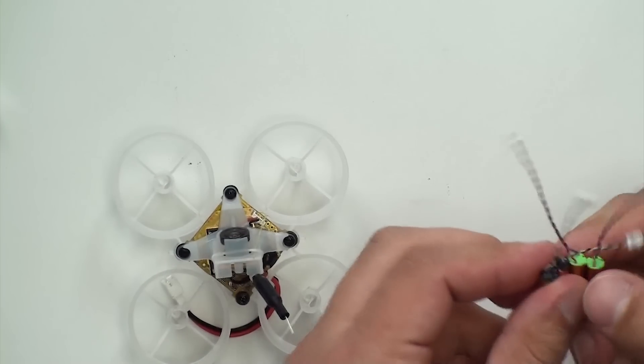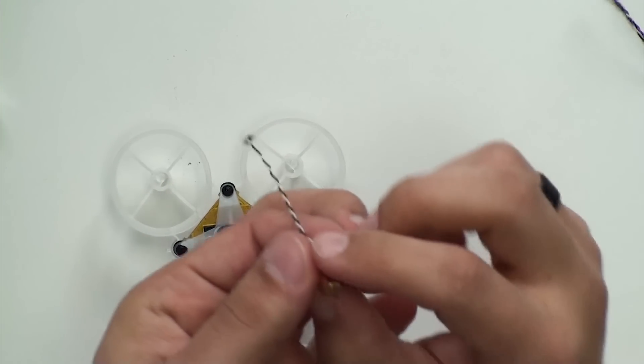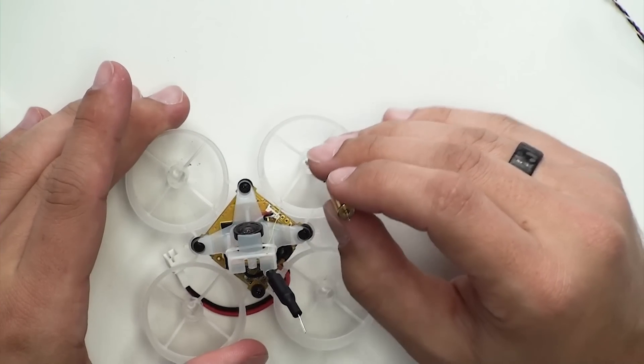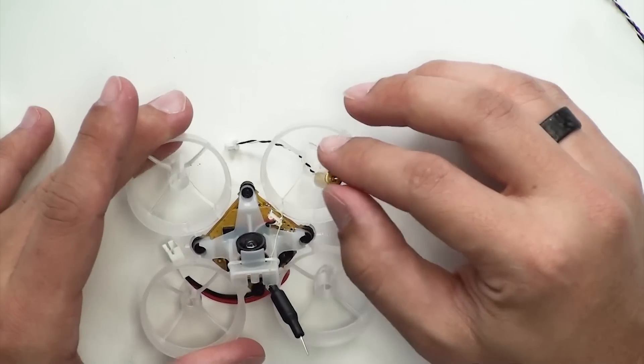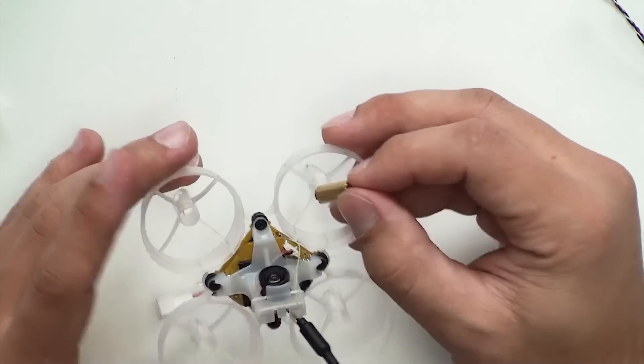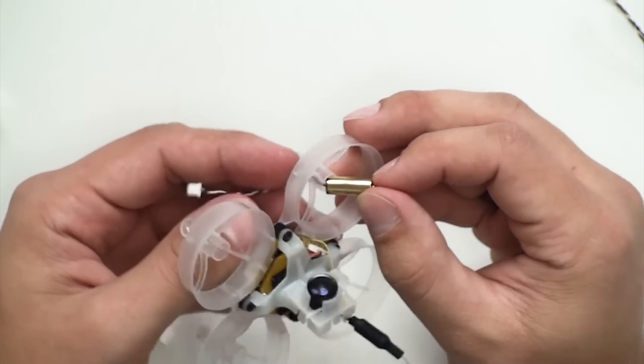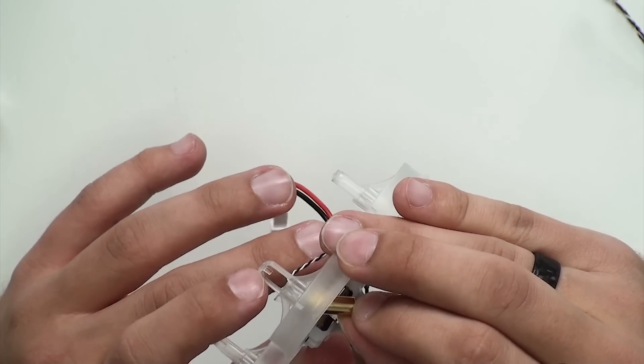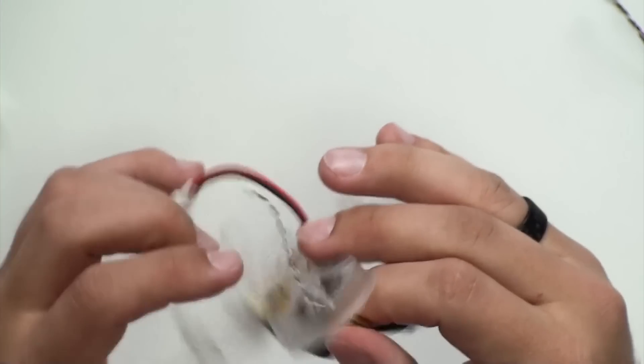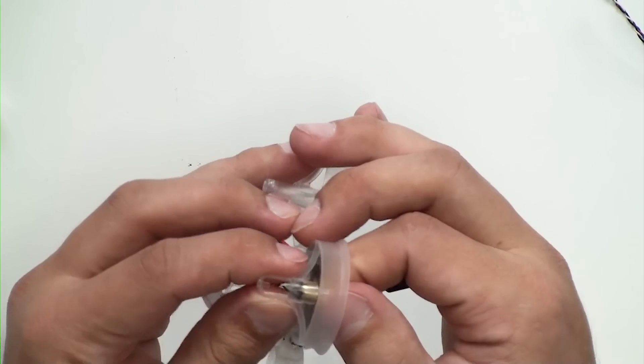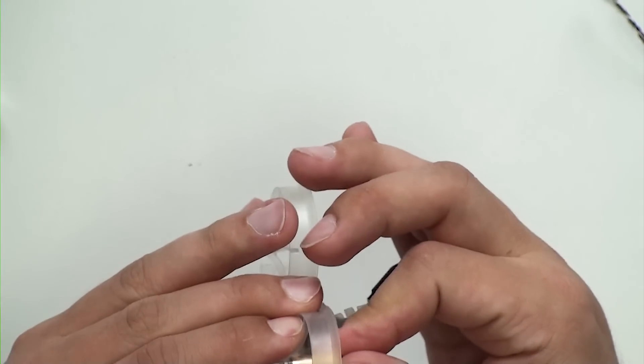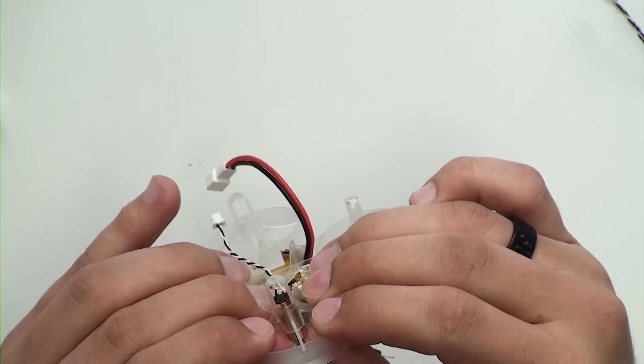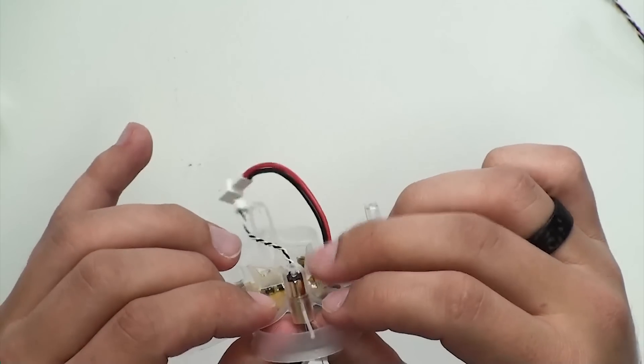Now we can start putting the motors into the frame. Take a black and white motor and put it in the top right position, which is a counterclockwise spinning motor. Fish it in there so the wire is coming out towards the board. If you look inside, there's a little pin sitting at the bottom that will stop the motor. Make sure you pull the wire so there's an opening and it doesn't sit on the motor wires and put stress on them, so they have nice clearance and don't get pinched.